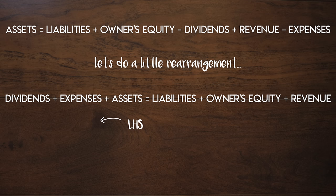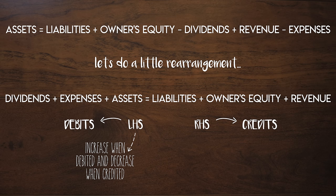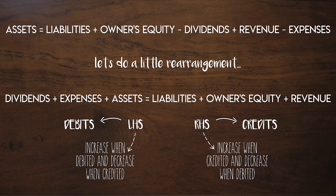The left-hand side — dividends, expenses, and assets — represents debits. These increase when debited and decrease when credited. The right-hand side is the opposite: liabilities, owner's equity, and revenue are credits. These increase when credited and decrease when debited.